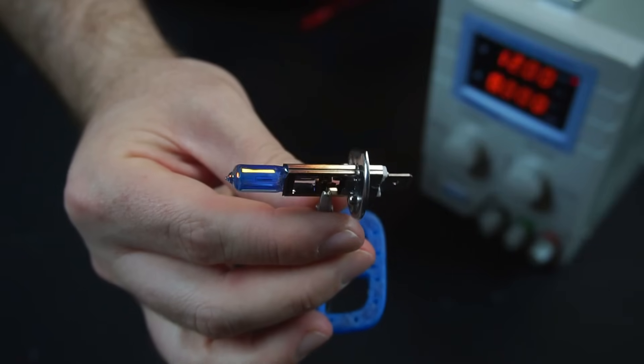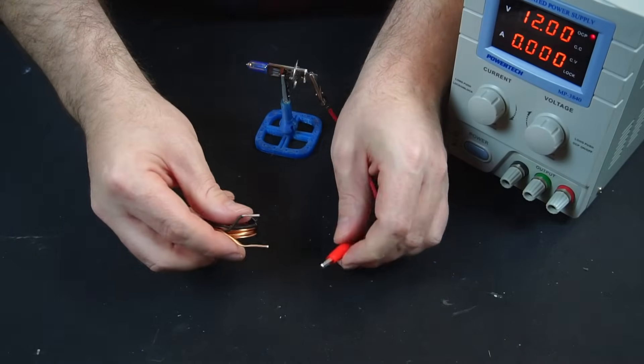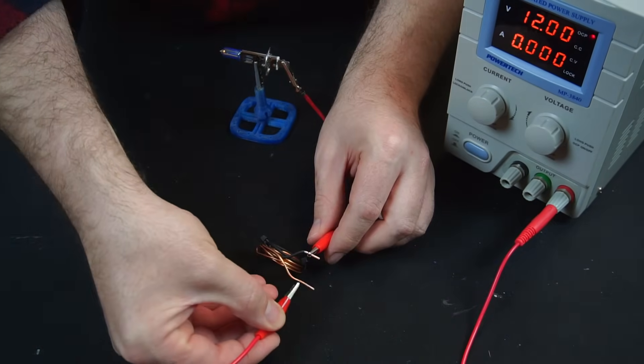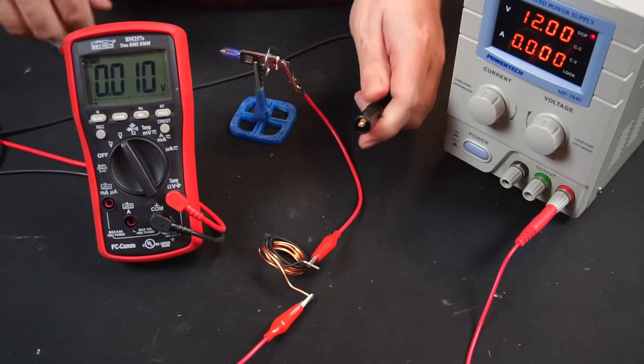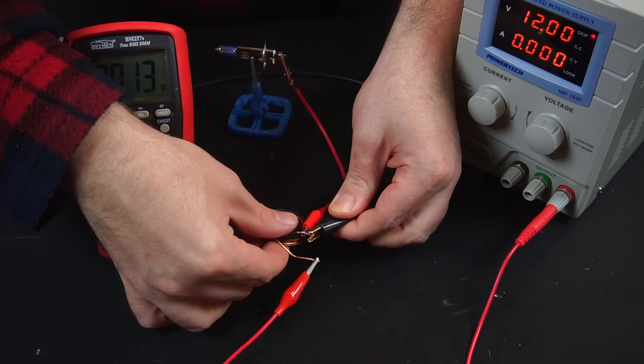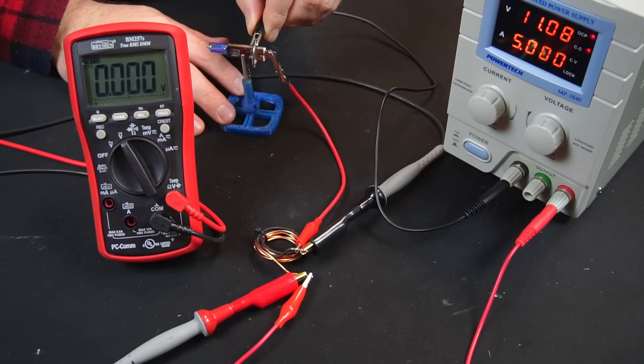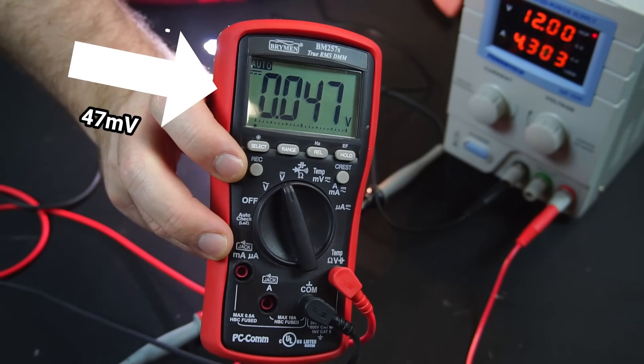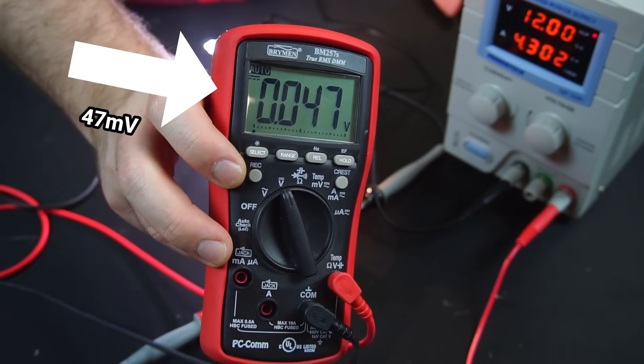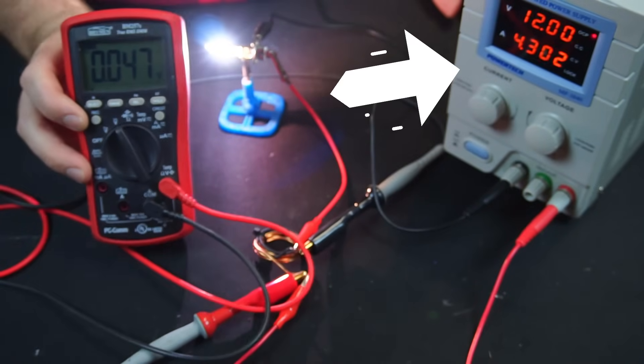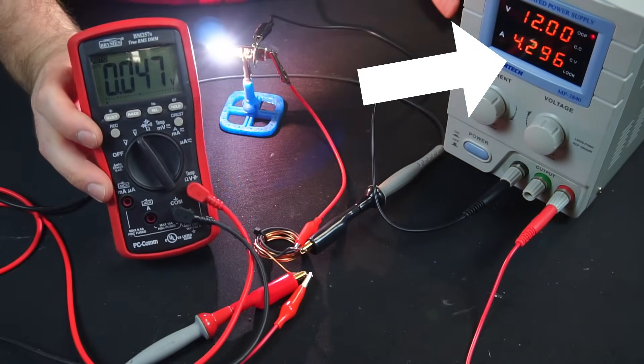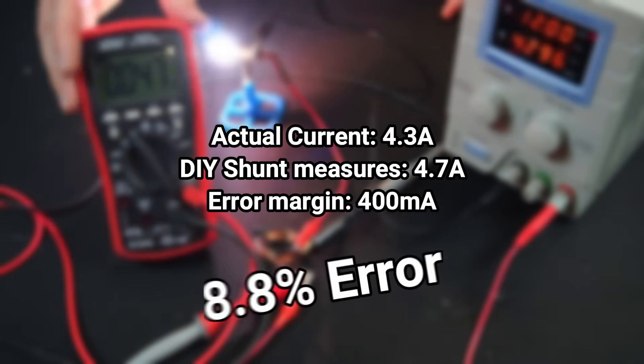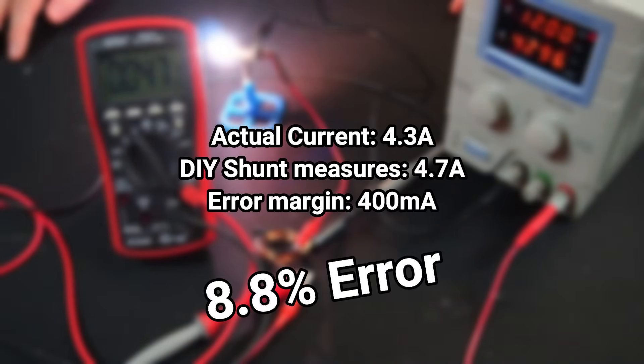So how does our DIY 10 milliohm shunt compare to its commercial counterpart? Well, let's go back to our test setup with the light bulb. Just like before, the shunt is connected in series with the load on the positive rail, and my multimeter will be measuring the voltage drop across our DIY shunt. Okay, let's fire it up. So according to the meter, the current passing through our DIY shunt is 4.7 amps, which is around 400 milliamps higher than reality.